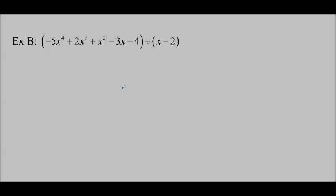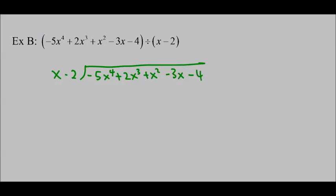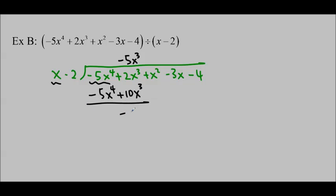Example B. Set it up on your own and then I'm going to do it as well. So here we go. Negative 5x to the 4 plus 2x cubed plus x squared minus 3x minus 4. We're again just going to concentrate on the beginning. x times negative 5x cubed is negative 5x to the 4, so I just multiply this term by negative 5x cubed.